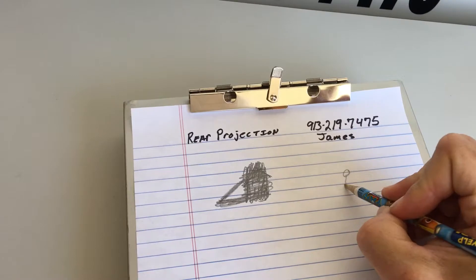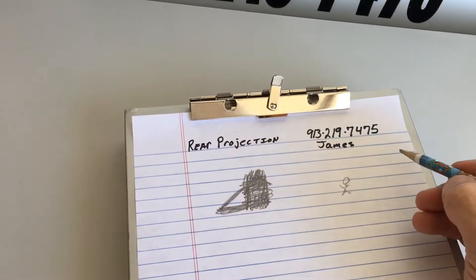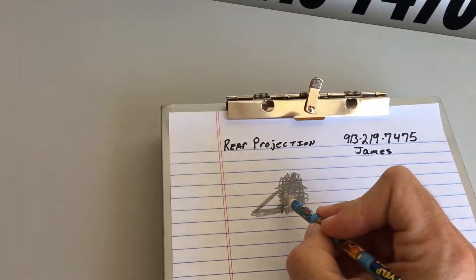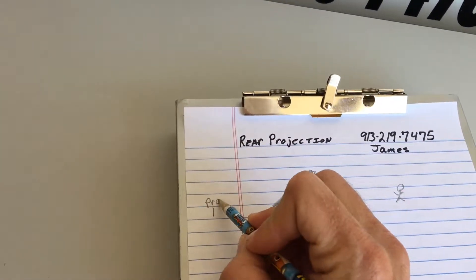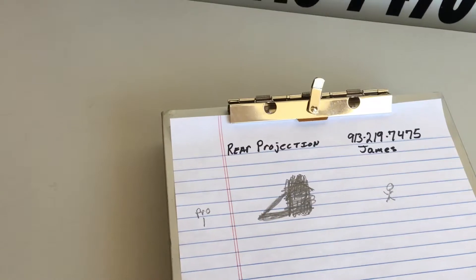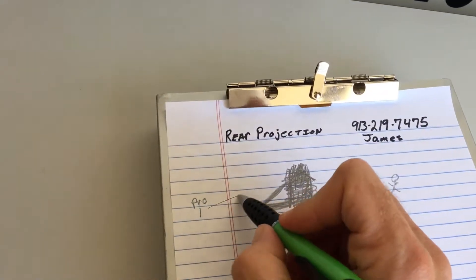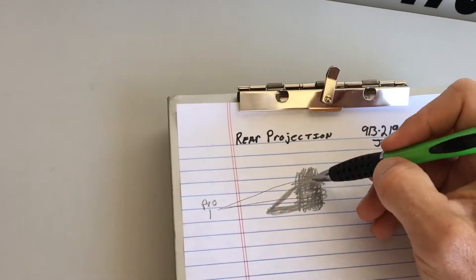So if this is your happy crowd, your audience, this is your screen. Behind the screen, you're going to put the projector and it's going to shoot the picture backwards at the screen.